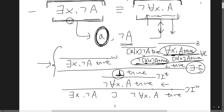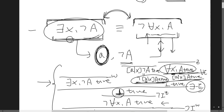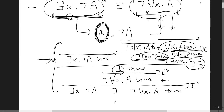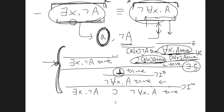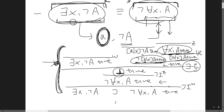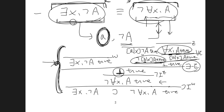The derivation tree closely reflects the reasoning in human language — that's the beauty of constructive logic. Everything you can prove using a derivation tree can also be interpreted in human language, because constructive logic reflects logical reasoning in human language and vice versa.